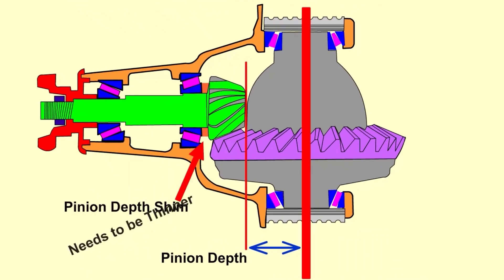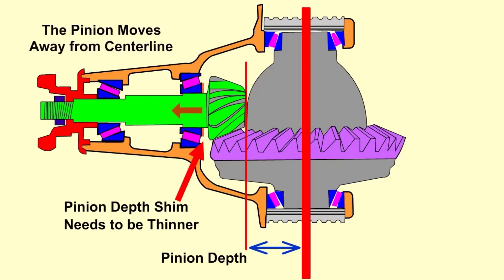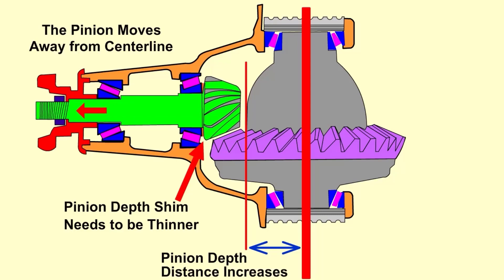To increase the pinion depth on this example, the head of the pinion must move away from the centerline of the ring gear. For this to happen, the depth shim must be smaller. With a smaller shim, the pinion depth value is increased.